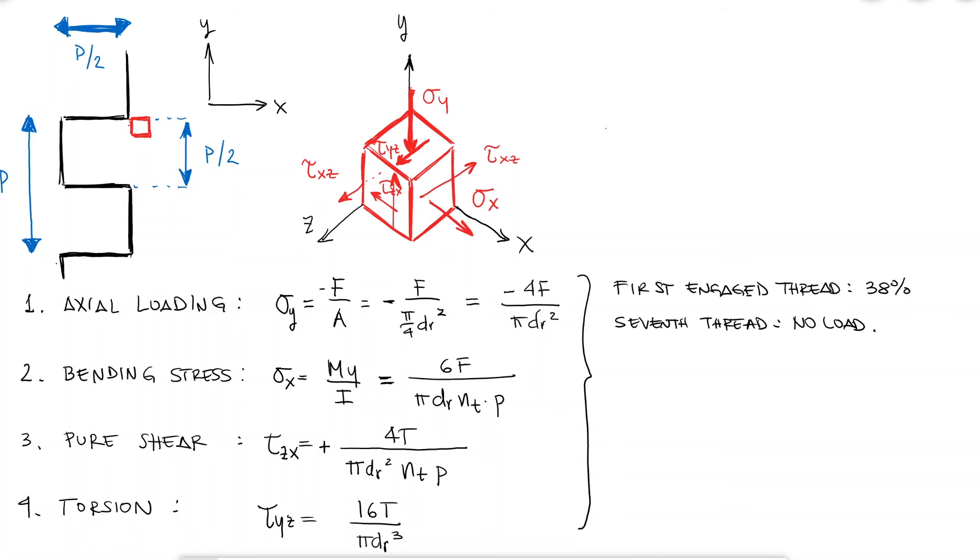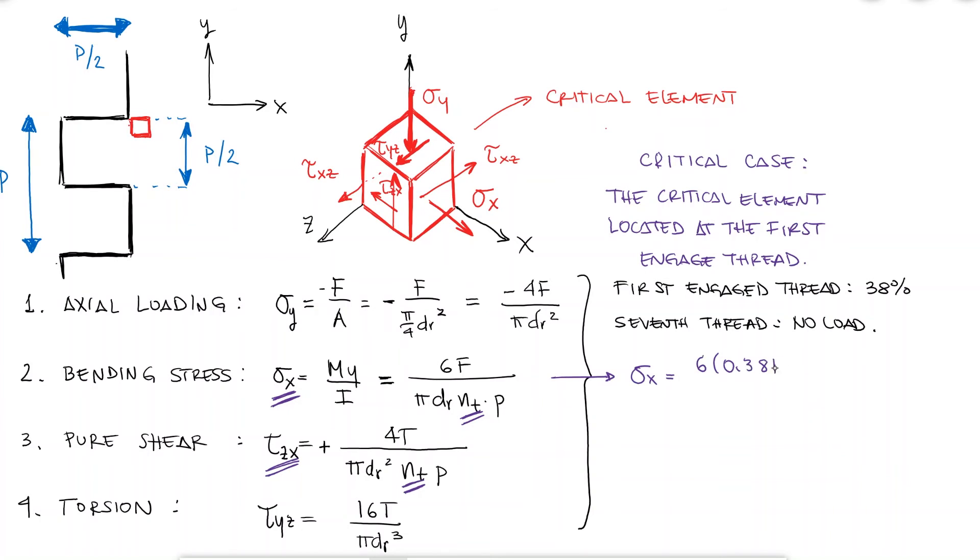This is useful to us in that when we're designing a part that needs to be threaded to put a screw through it, as a rule of thumb, more than 6 engaged threads will not make the joint safer. It is also useful because we can estimate those stresses for the critical case, which is the first engaged thread that carries most of the load. The expressions that depended on the number of engaged threads, sigma x and tau zx, could be modified to have 38% of the force and 38% of the torque with nt equal to 1, one thread. This would only be true for when the number of engaged threads are 6 or more.